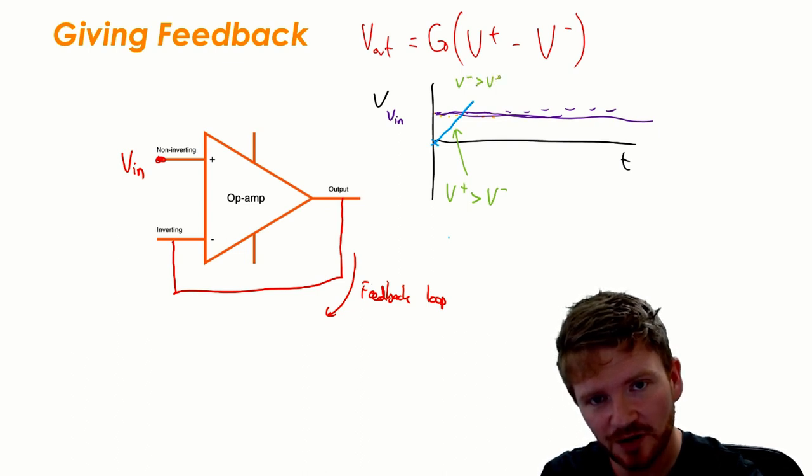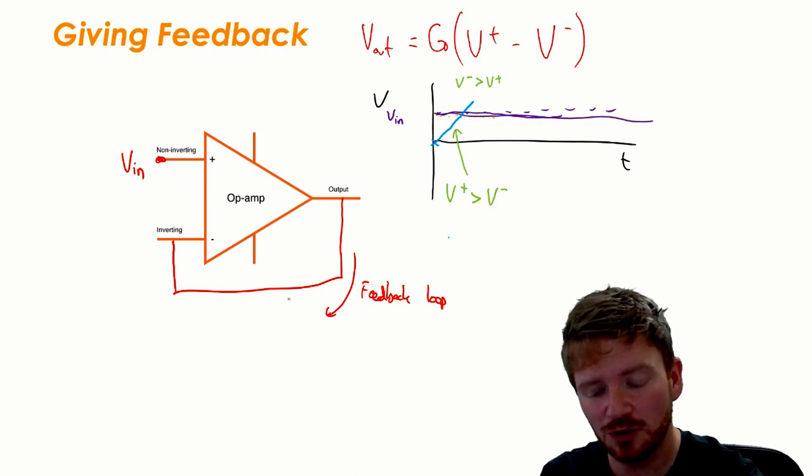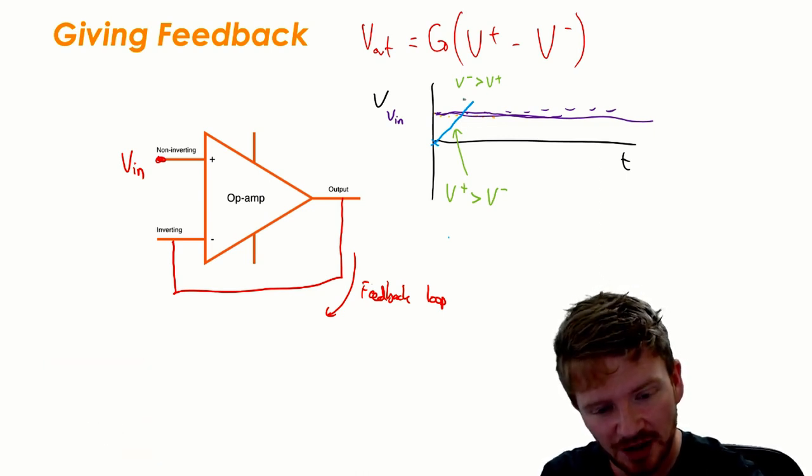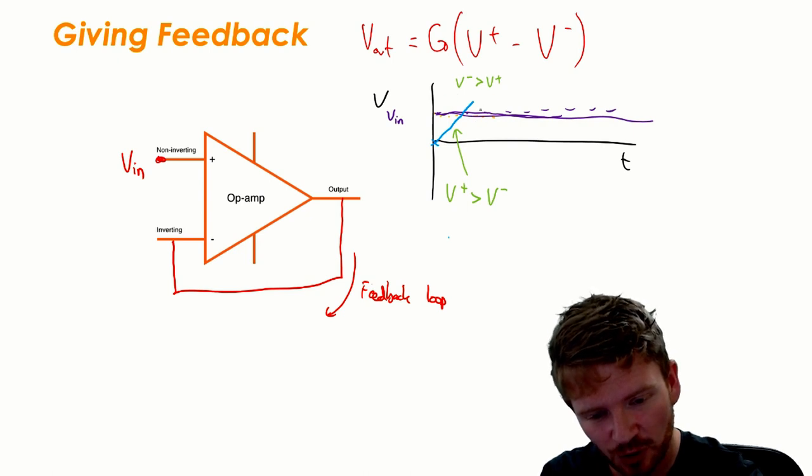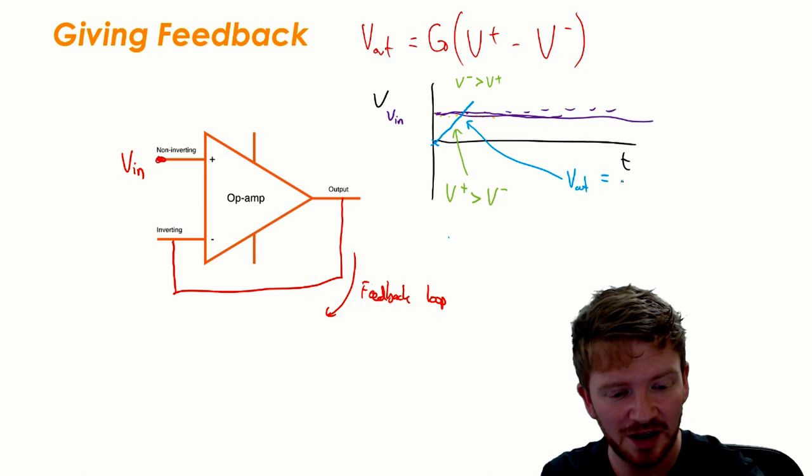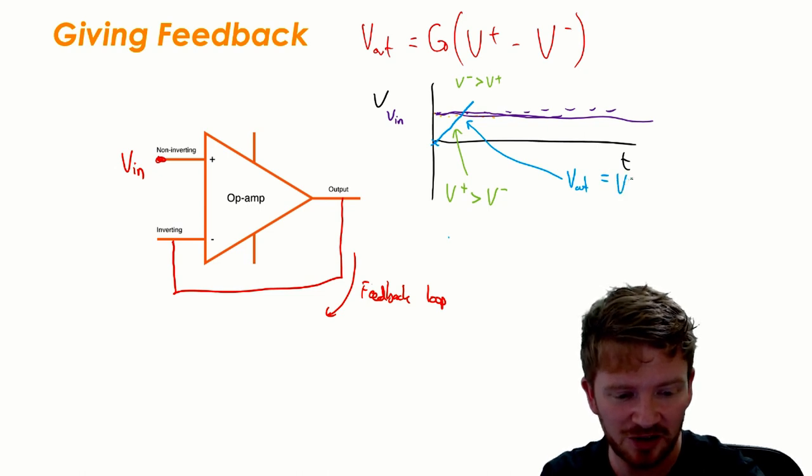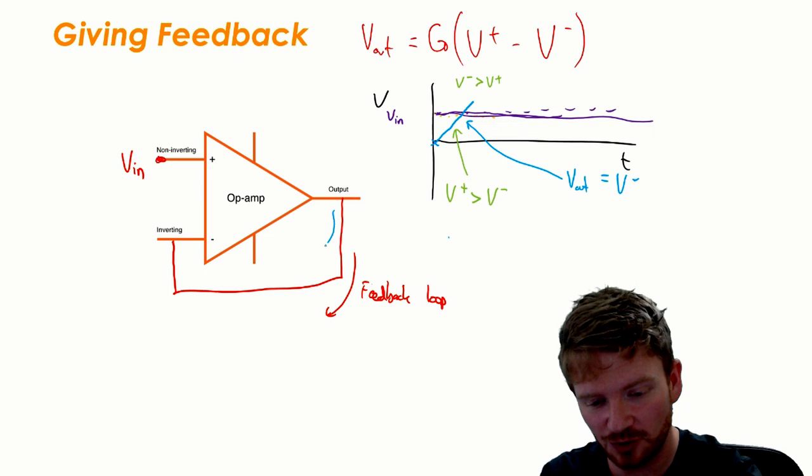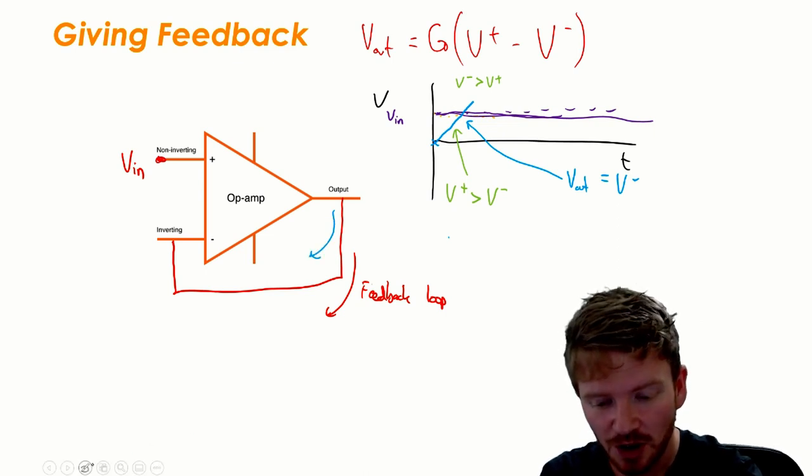This blue line is V out, but V out, because it's connected by a simple wire, is absolutely identical to the inverting input because the potential will just flow through there.